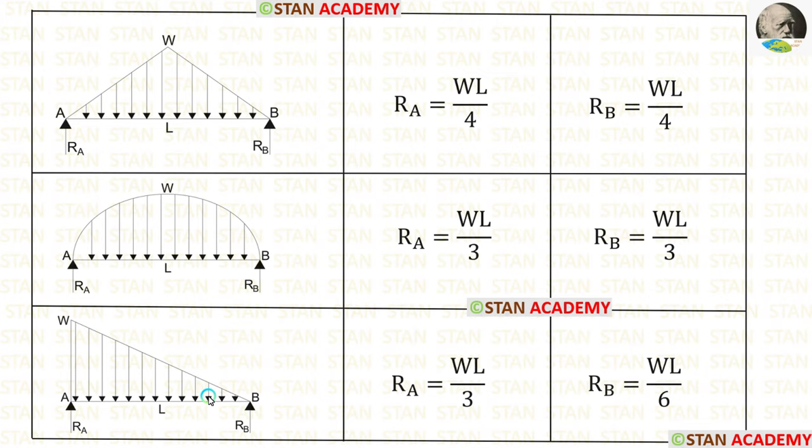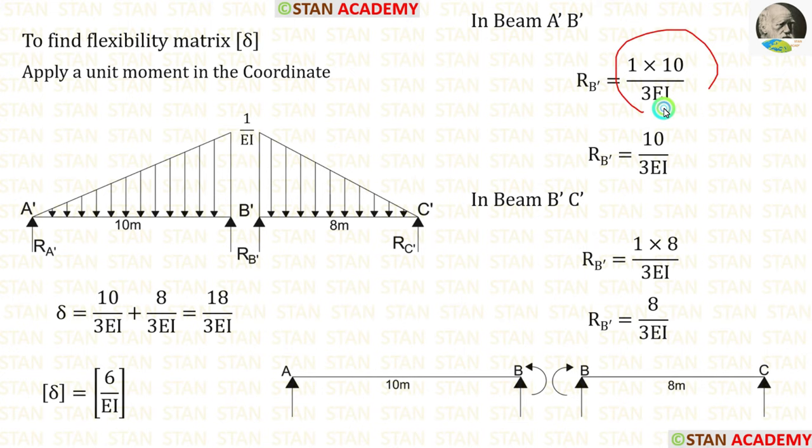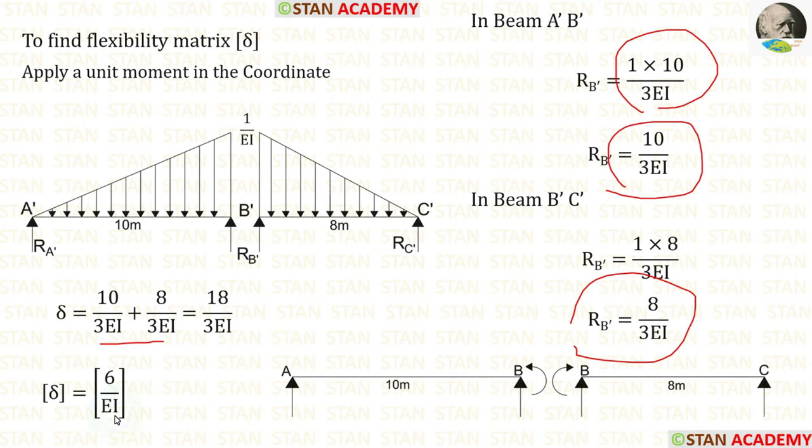Alternatively, we can use the formula. If in a simply supported beam, a right-triangle UVL is acting, the formula for reactions are WL/3 and WL/6. We want the reaction equal to WL/3. Using the formula, we can easily calculate RB'. Then we add both values and we are getting the same value for the flexibility matrix.